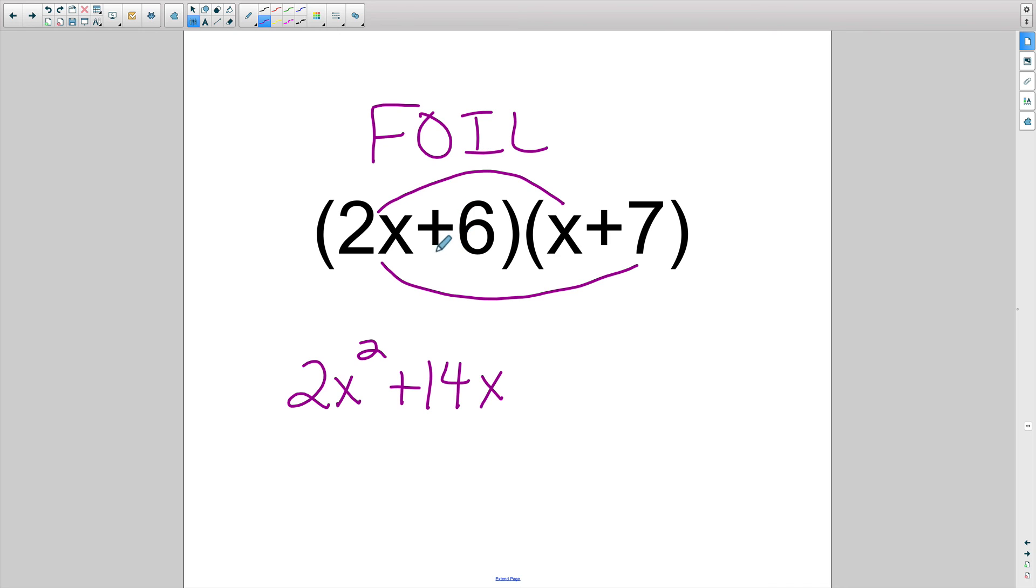Then we're going to do the inner part, which is a positive 6 times x, which is positive 6x. And then the last, which is going to be a positive 6 times a positive 7, which is a positive 42.